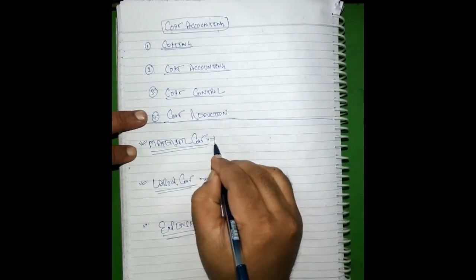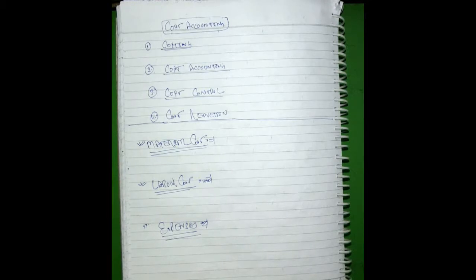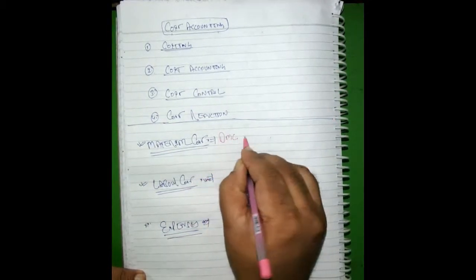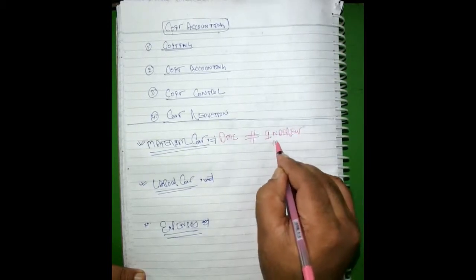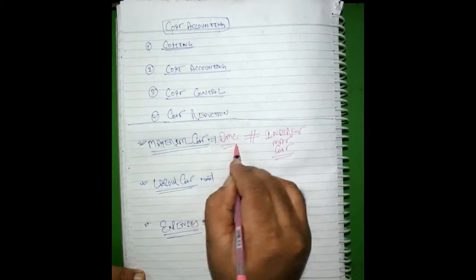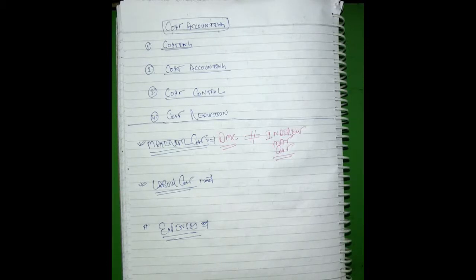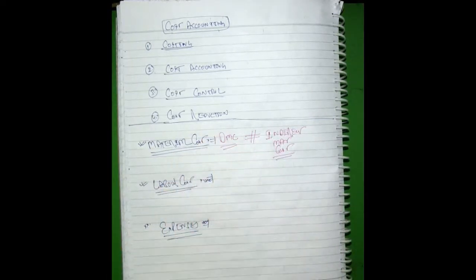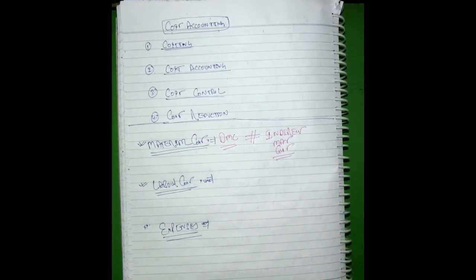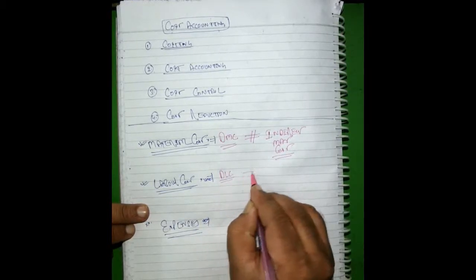These costs can be further classified. Material cost is going to be divided into direct material cost and indirect material cost. For example, in a teaching institution, the notes provided are direct material cost, but pamphlets, posters, or stationery distributed are indirect material. In a digital teaching system, this copy is direct material because it is directly used in teaching, but stationery used in the office is indirect material.